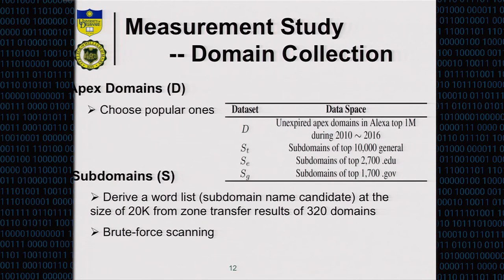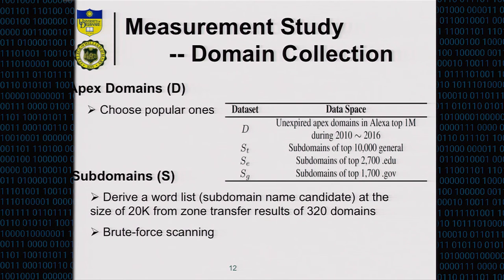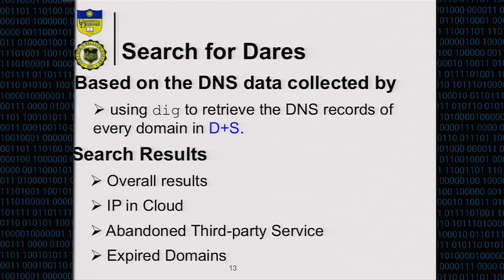To get subdomains, we first use zone transfers from 320 domains — the only ones that allow zone transfer — to get real subdomain names. For the rest, we created a wordlist based on those 320 domains, then did brute-force scanning based on the wordlist. The datasets cover all four types of DNS records. Based on the data, we search for dangling records across all three attack vectors: IP in cloud, abandoned third-party service, and expired domains.